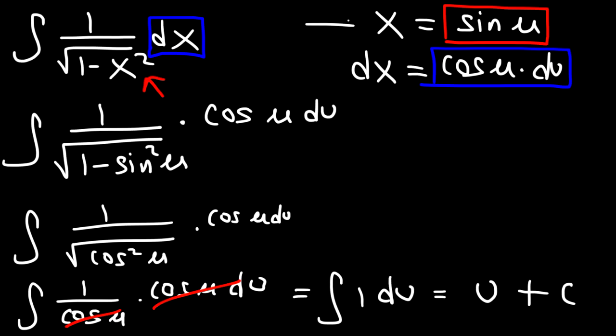Now if x is equal to sine of u, then u has to be the arc sine of x. When you're dealing with inverse functions you need to switch x and y, in this case x and u. So u plus c is really going to be arc sine of x plus c, and so this is the final answer.